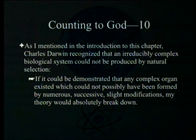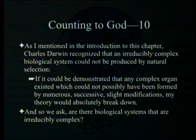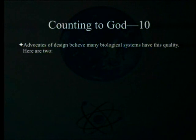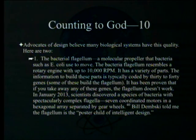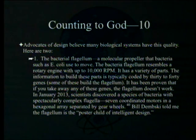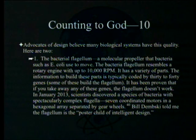Darwin's example was the eye — he believed it could develop by numerous successive slight modifications. But the question we must ask now is: are there biological systems that are irreducibly complex? Advocates of design believe many biological systems have this quality. One example is the bacterial flagellum — a molecular propeller that bacteria such as E. coli use to move, resembling a rotary engine running at up to 10,000 RPM, coded by 30 to 40 genes. It has been proven that if you take away any of these genes, the flagellum does not work.